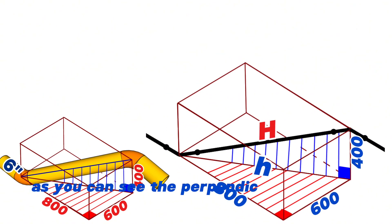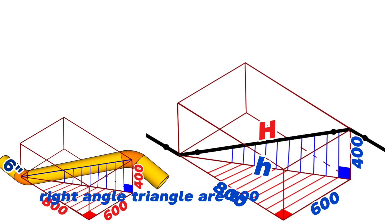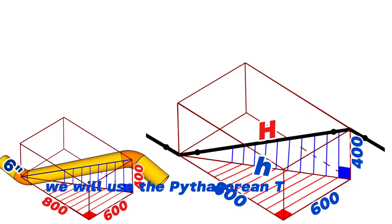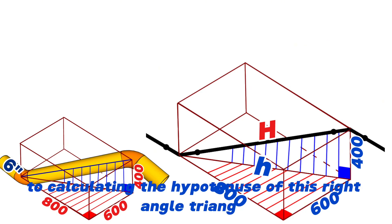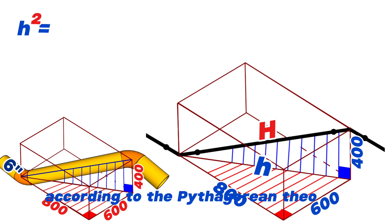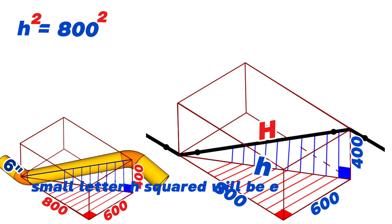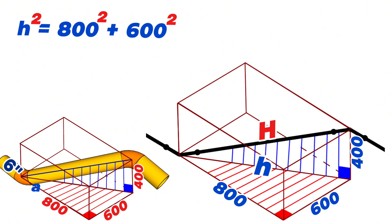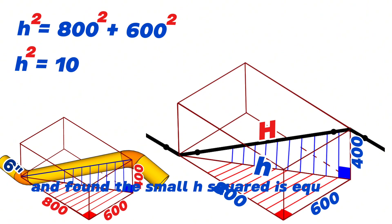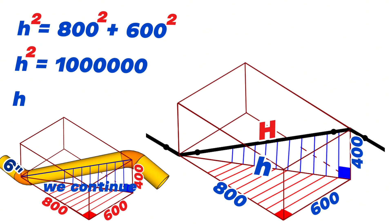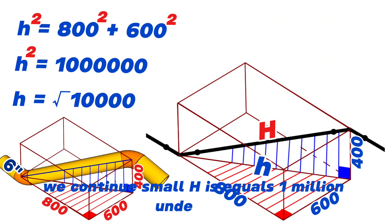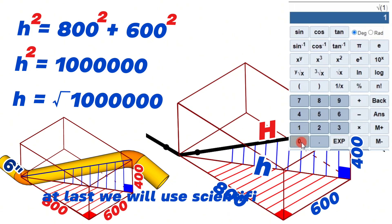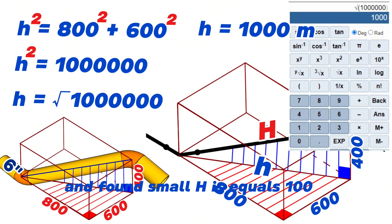The perpendicular sides of the red right-angle triangle are 800mm and 600mm. We will use the Pythagorean theorem formula to calculate the hypotenuse of this right-angle triangle. According to the Pythagorean theorem, small h squared equals 800 squared plus 600 squared. Continuing to calculate, small h squared equals 1,000,000. Therefore small h equals the square root of 1,000,000, which equals 1000mm.